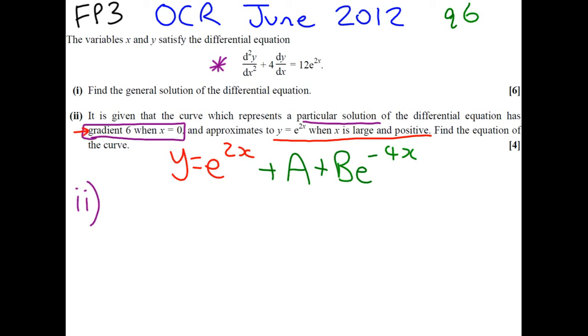So, when we're talking about gradient, we're talking about dy/dx. So, if we differentiate, we get 2e to the 2x minus 4Be to the minus 4x. And the first boundary condition tells us that this equals 6 when x equals 0. So, if we substitute the values in, x is 0. Anything to the power of 0 is 1. So, we're given that 2 minus 4B equals 6.